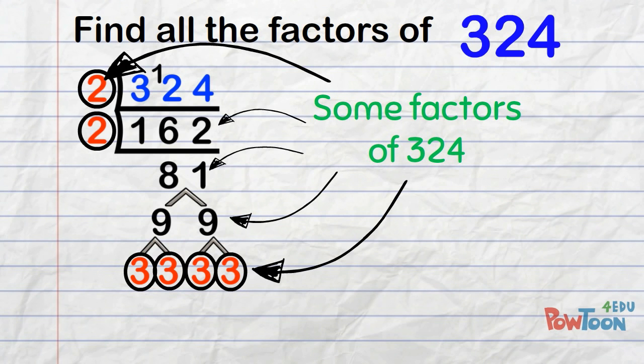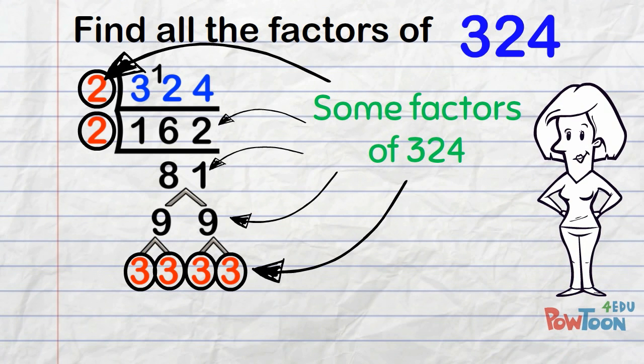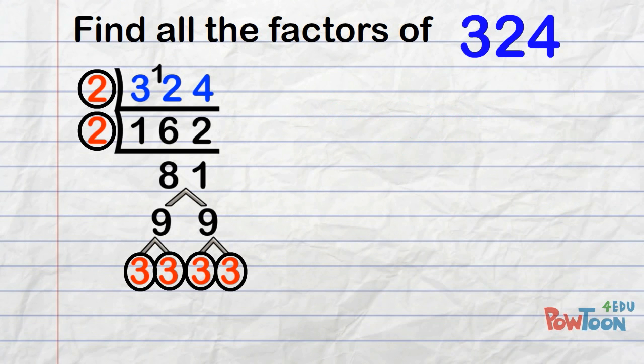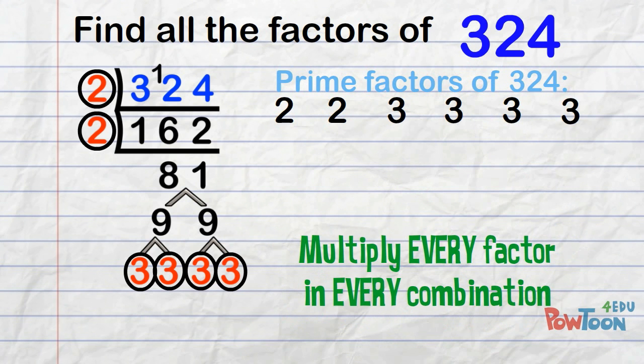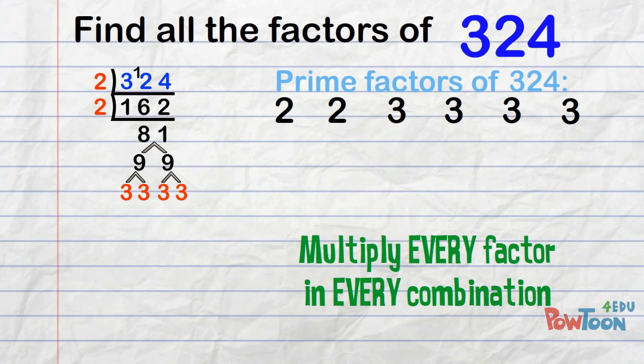And we've found some of its factors already. To find all the factors of 324, we use the method I showed you last time. Set out the prime factors to create your workspace. Remember, we multiply every factor in every combination to get all the factors of 324.